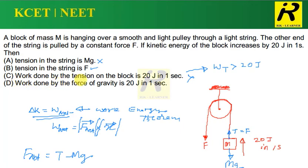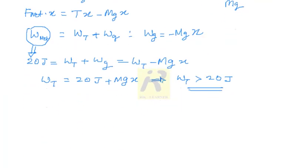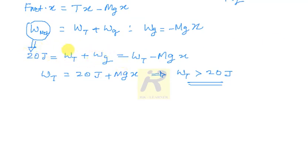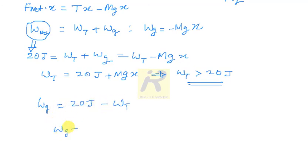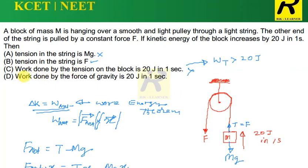What about the last option D? It says work done by the force of gravity is 20 Joules in one second. Looking at the same equation, work done by gravity is simply Mg·X, which doesn't equal 20 Joules. From the equation, Wg equals 20 Joules minus Wt, and since Wt is more than 20 Joules, Wg becomes negative — it is something different from 20 Joules. So Option D is also wrong.